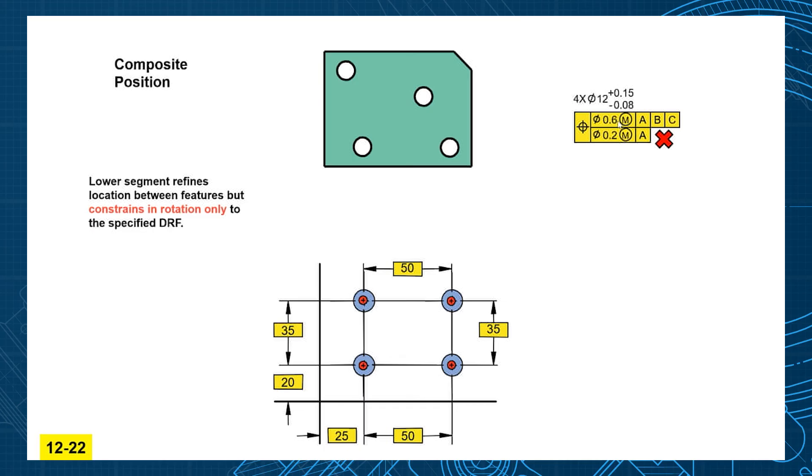And this is most common on like big panels. You have a big panel and they said I want these four holes right here to be located to the datums within 0.2. No way. Look how far away that is. I can't hold those holes 0.2 relative to datums.